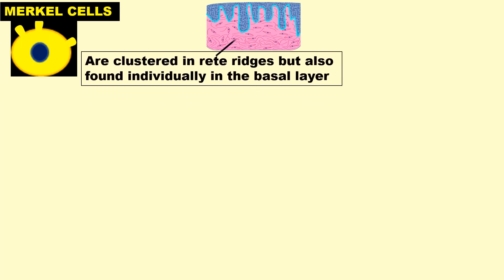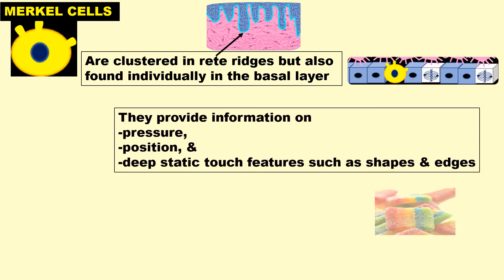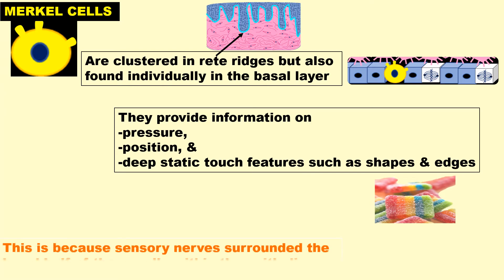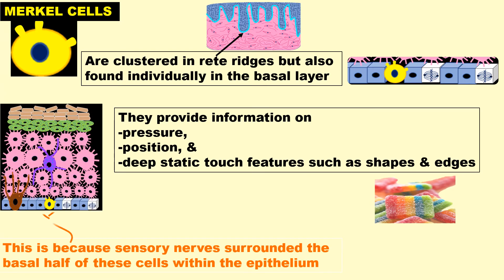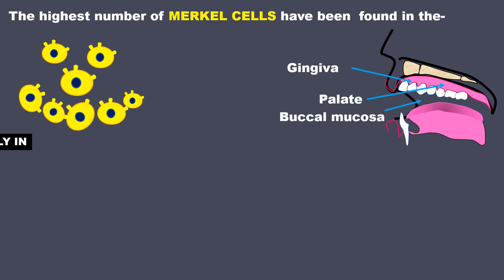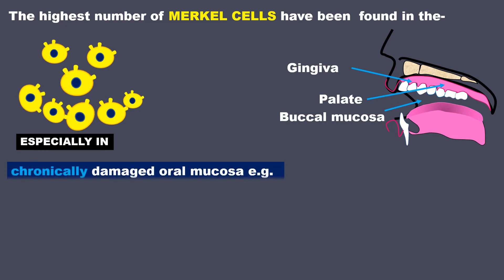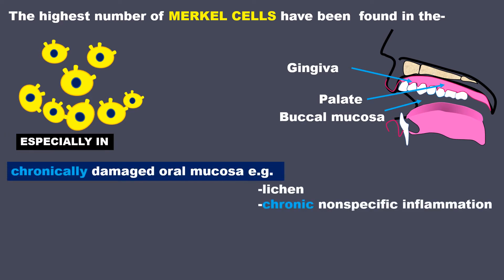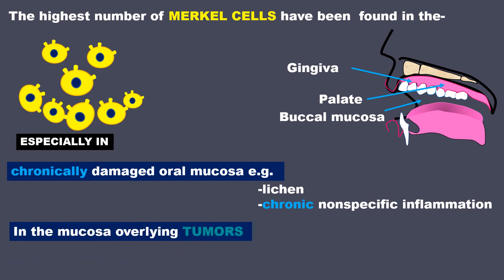Merkel cells are clustered in rete ridges but are also found individually in the basal layer. They provide information on pressure, position and deep static touch features such as shapes and edges. This is because sensory nerves surround the basal half of these cells within the epithelium. The highest number of Merkel cells have been found in the gingiva, palate, buccal mucosa, especially in chronically damaged oral mucosa like in lichen or chronic non-specific inflammation and also in mucosa overlying tumors.